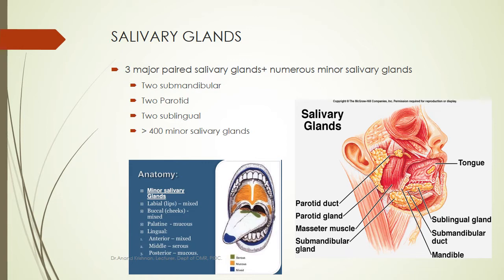There are three pairs of major salivary glands: parotid, submandibular, and sublingual, plus numerous minor salivary glands. The parotid starts to develop between the fourth to sixth week of intrauterine life, the submandibular gland around the sixth week, and the sublingual gland including minor salivary glands roughly around the eighth to twelfth week of embryonic life. The developmental stages are bud formation, epithelial cord formation, branching, glandular differentiation, canalization, and cytodifferentiation.